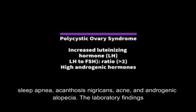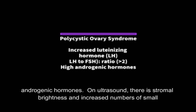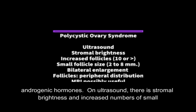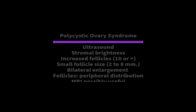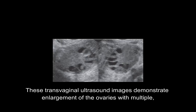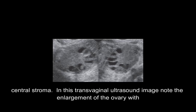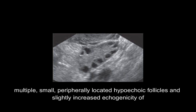Laboratory findings indicate increased luteinizing hormone, an LH to FSH ratio of greater than 2, and elevated androgenic hormones. On ultrasound, there is stromal brightness and increased numbers of small follicles with bilateral ovarian enlargement and peripheral follicle distribution. MRI may be useful. These transvaginal ultrasound images demonstrate enlargement of the ovaries with multiple small, peripherally located hypoechoic follicles and slightly increased echogenicity of the central stroma.